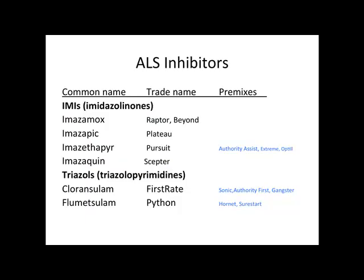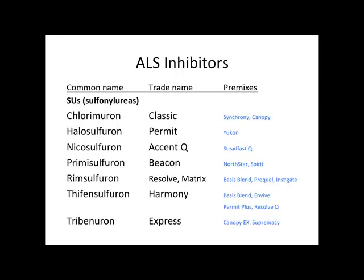For the ALS inhibitors, we have common names or active ingredient names — these are universal. The trade names and premixes have a lot of variation, so always know what you are spraying. Premixes are products or trade names with multiple active ingredients; know all the active ingredients in your premixes and which active ingredients are providing control. We have them broken up within the different families, so again we have lots of different products.